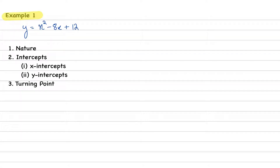We are going to do an example question and learn how to sketch a quadratic curve. The things required are: number one, nature; number two, intercepts — x and y; and finally the turning point. You may notice that I always keep the order as nature, turning point, then intercepts. That's very good observation. I will explain the reason behind it in this video.